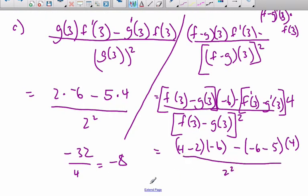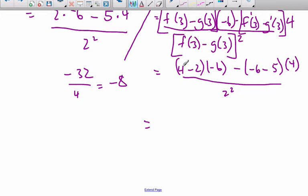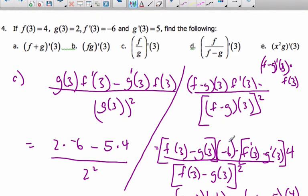Continuing, I get 4 minus 2 is 2, times negative 6 is negative 12, minus negative 11 times 4 is negative 44, so plus 44, over 4, which is 36 over 4, which happily is 9. Be careful when doing your general functions that you don't grab the wrong derivative or function.